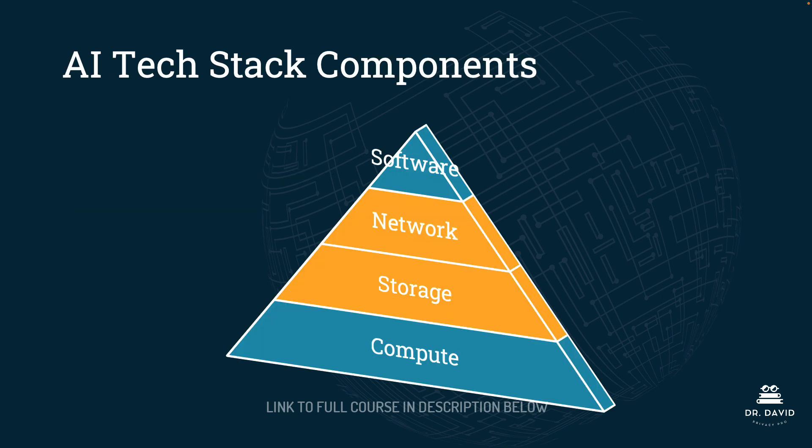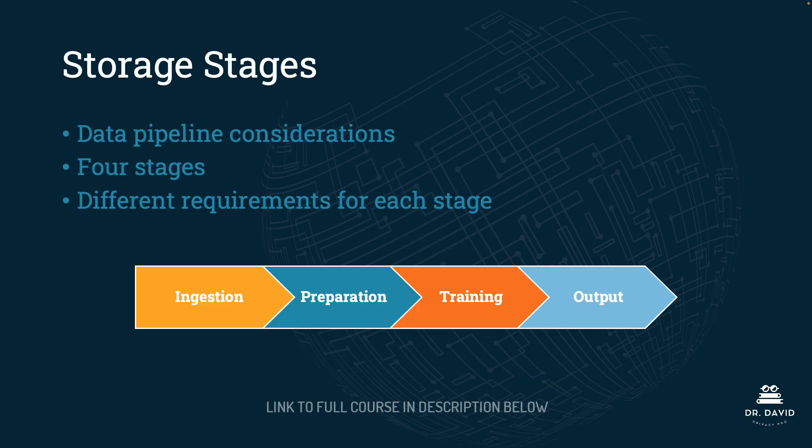Here's our diagram. We just talked about compute in the previous lecture. We're talking about storage and network here, and in the following lecture we will discuss software. When it comes to storage stages, there are four different stages in the data pipeline, and each of these requires different considerations.